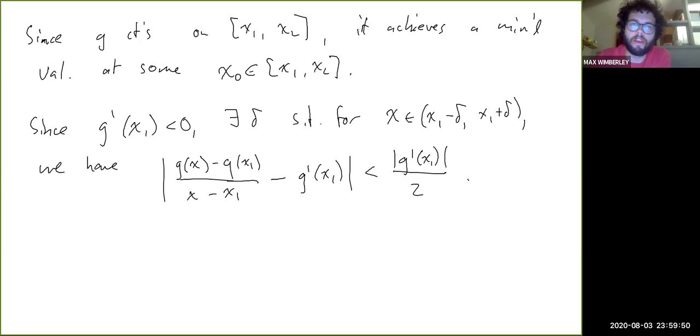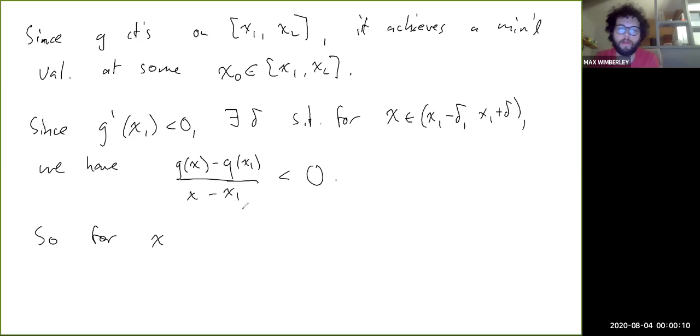This is the same argument we made in Rolle's theorem—the exact same reasoning about how nearby the point where we're taking the derivative, these difference quotients have to have the same sign as the derivative. So if x₁ less than x less than x₁ plus delta, and x₁ less than x, then the denominator here is positive. So for this to be negative, the numerator would have to be negative.